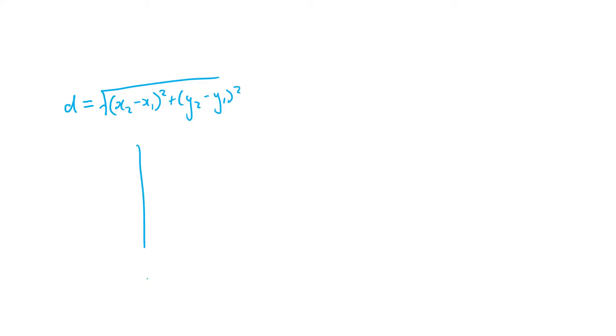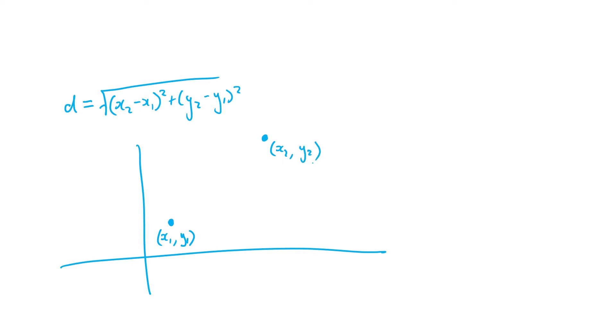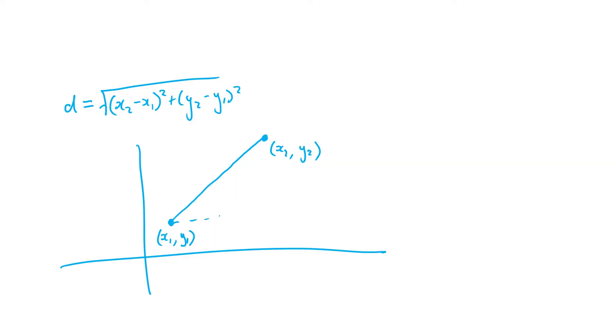So let's think about where it comes from. If I have the Cartesian plane, I have my first point which is going to be (x1, y1) and my second point which is going to be (x2, y2). How we find the distance is basically where we draw a line for the shortest distance between the points. When working with the Cartesian plane, we want to split things into two dimensions — a horizontal component and a vertical component.